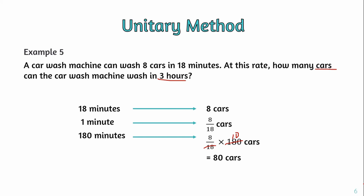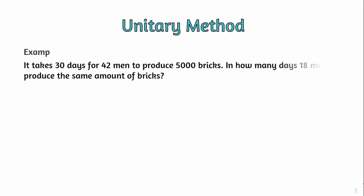Now the last example, example number six: it takes 30 days for 42 men to produce 5,000 bricks. In how many days can 18 men produce the same amount of bricks? Since fewer men are working, they will need more days. We use the unitary method to find the number of days required for 18 men.